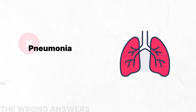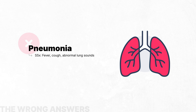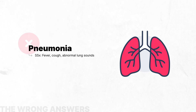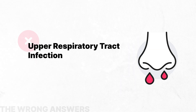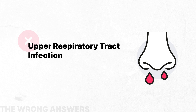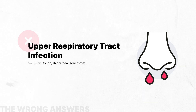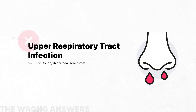Pneumonia would present with a fever, a cough, crackles on pulmonary exam, and a radiograph demonstrating interstitial infiltrates or an opacification. Upper respiratory tract infection would present with other signs of localizing infection, such as a cough, a runny nose, and erythema of the posterior oropharynx.